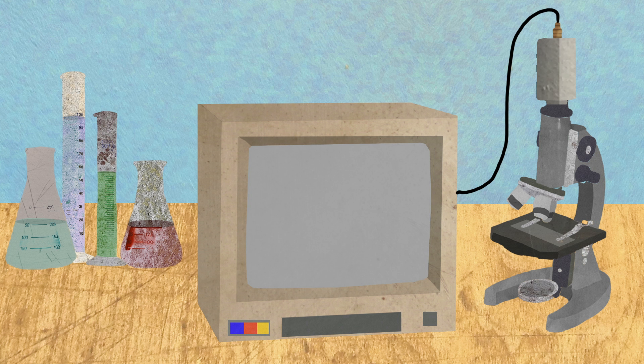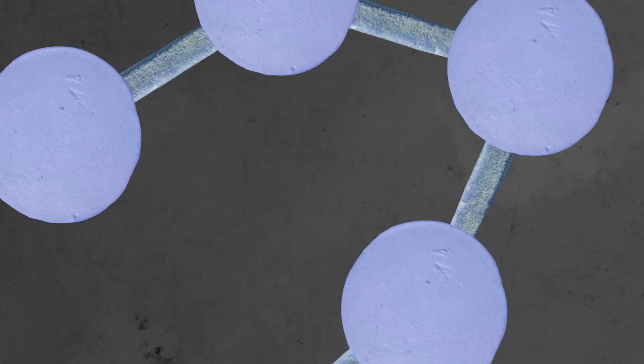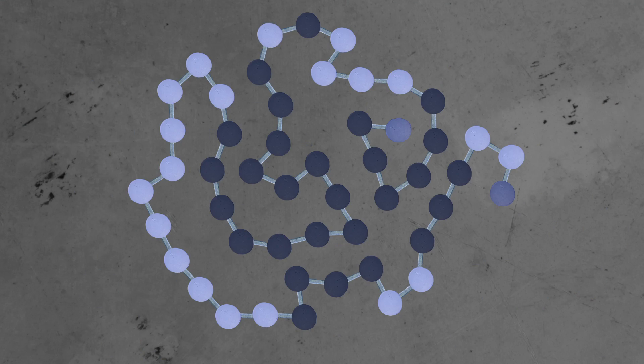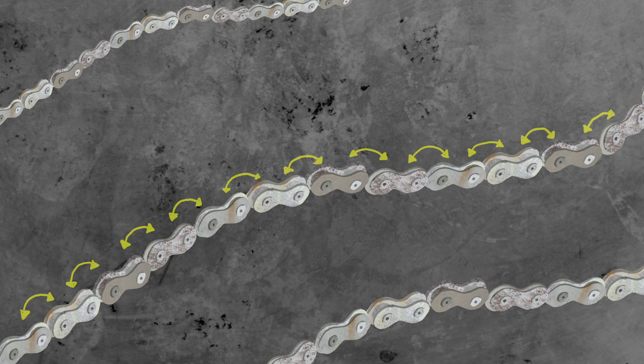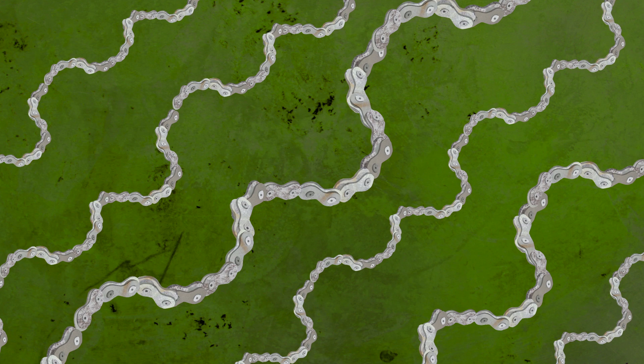In biology and chemistry, self-assembly is everywhere, from atomic interactions, cellular replication, to DNA, RNA, and protein folding. Proteins are like bicycle chains with sequences of amino acid links. They self-assemble into 3D structures because of the interaction between the amino acids along the chain, as well as the relationship between the chain and the environment. These forces make the flexible chain fold into a 3D shape that governs the function of the protein.